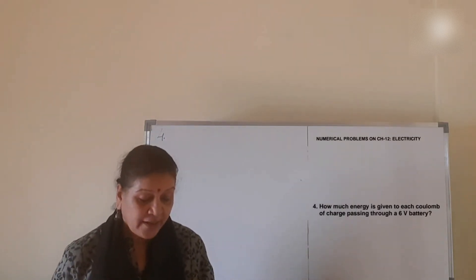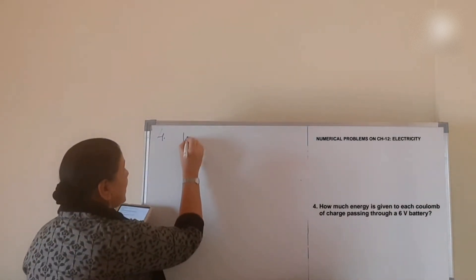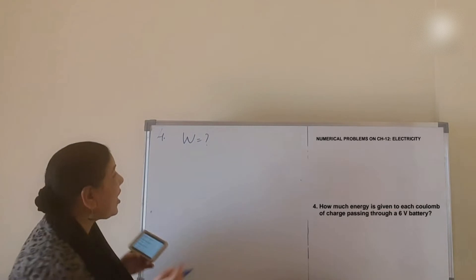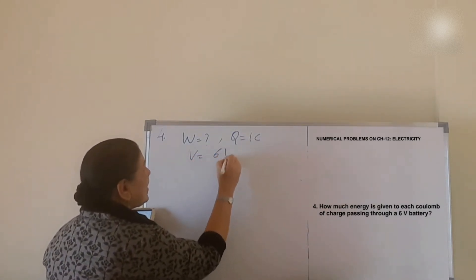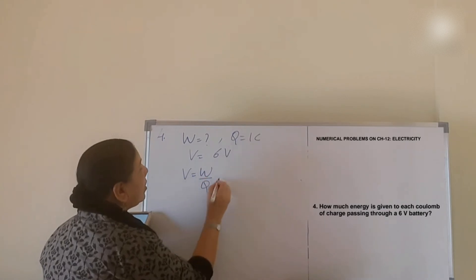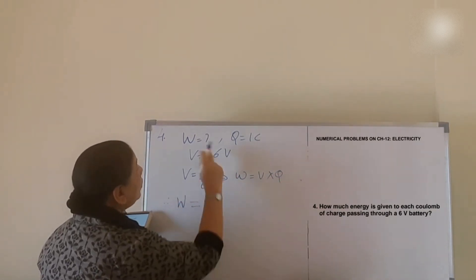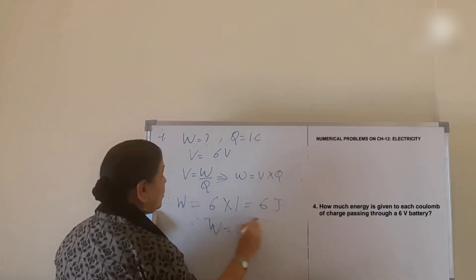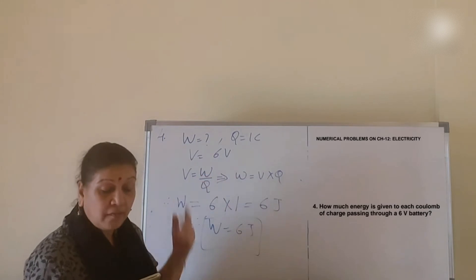Question number 4: how much energy is given to each Coulomb of charge passing through a 6-volt battery? Energy (work) W is what we have to find. They have already given Q = 1 Coulomb (each Coulomb) and V = 6 Volts. Using V = W/Q, therefore W = V × Q = 6 × 1 = 6 Joules. Therefore W = 6 Joules. Again a simple direct numerical — put the values in the formula and get the answer.